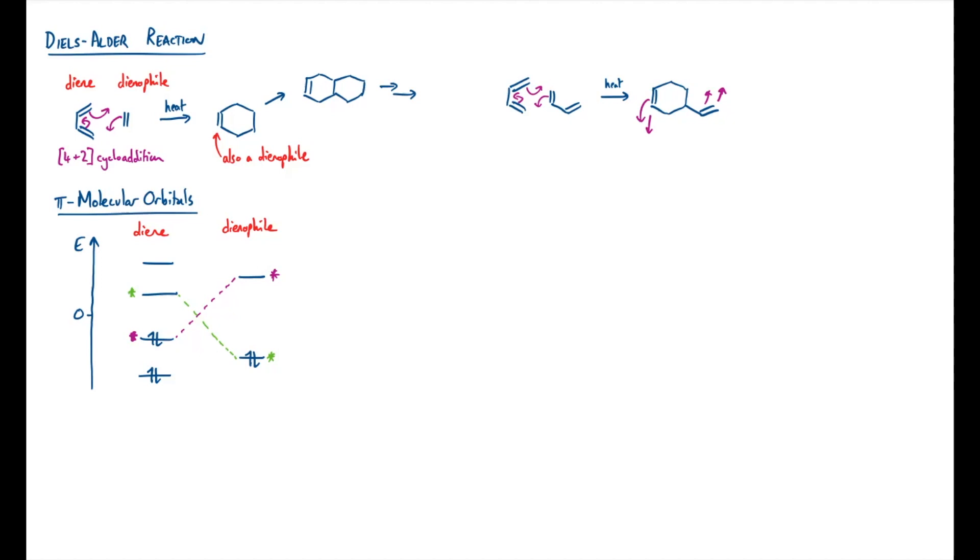So the trick that we play is that we make sure we have an electron withdrawing group on our dienophile, like this. This is commonly a carbonyl group, maybe like this ester. And what this does is lower the LUMO of the dienophile, so that it's a better match for the highest occupied molecular orbital of the diene. This means that any reaction will be faster using the dienophile with an electron withdrawing group, so that means once we've done one cycloaddition, we get no further reaction.